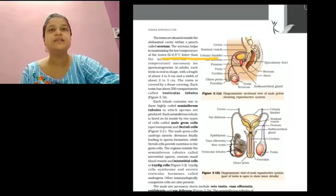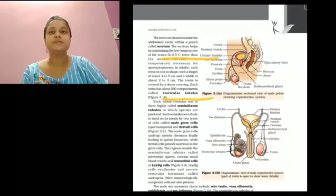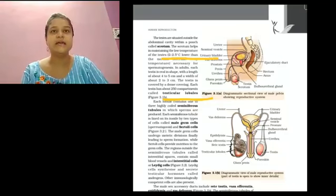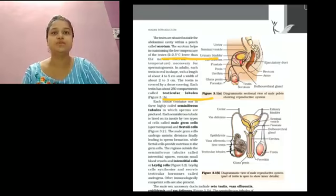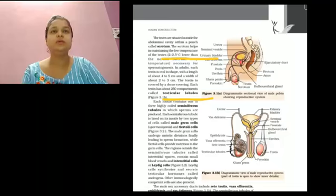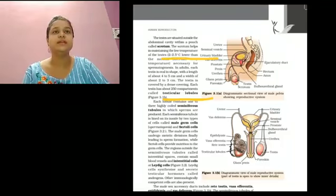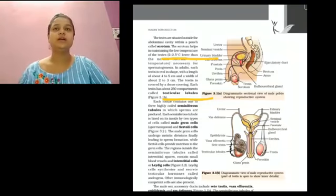Testes is oval in shape. It is generally 4.5 cm long and 2.5 cm wide. Each testis has about 250 compartments called testicular lobules. Each lobule contains 1 to 3 highly coiled tubules called seminiferous tubules. The seminiferous tubules are the site of meiosis that leads to the formation of spermatozoa. The inner lining of the seminiferous tubule consists of two types of cells: spermatogonia and Sertoli cells.